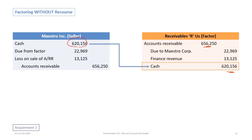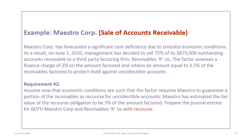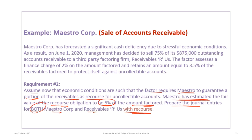We now proceed to the second requirement, where we assume economic conditions are different and Maestro has to guarantee a portion of the receivables as recourse. Maestro estimates the fair value of the recourse obligation at 5% — this is estimated by the seller, not calculated by the factor. So Maestro figures the recourse obligation value will be 5% of the amount factored. The requirement is to prepare the journal entries for both parties, this time with recourse.